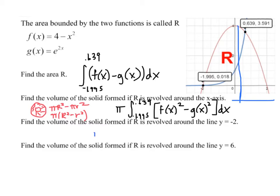So, it's going to look very similar here. We're still going to have pi. Still going to have the same bounds. But, the radius isn't f of x anymore. It's f of x plus 2. And, the radius isn't g of x. It's g of x plus 2.